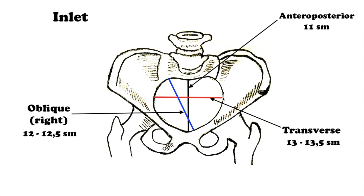The oblique dimension, left and right: the right dimension is the distance from the right sacroiliac joint (articulatio sacroiliaca) to the left iliopubic eminence (eminentia iliopubica), and vice versa. It measures 12 to 12.5 cm.